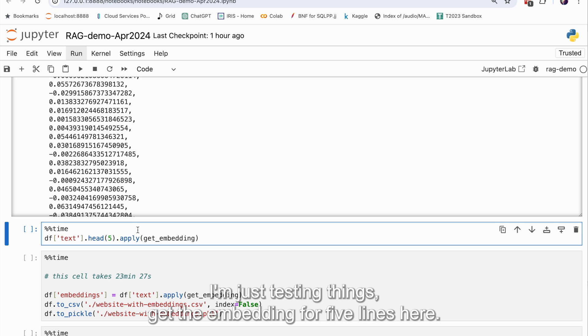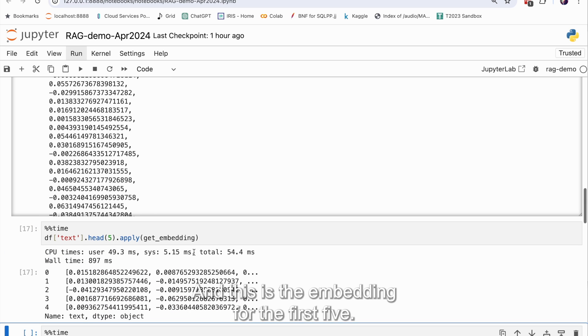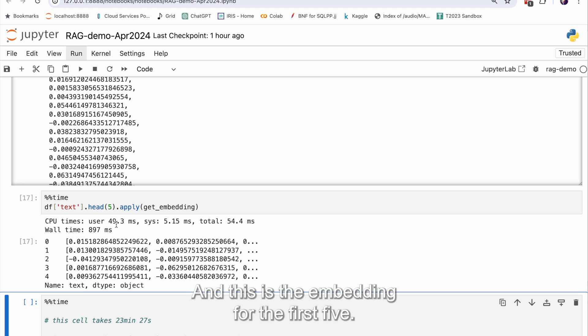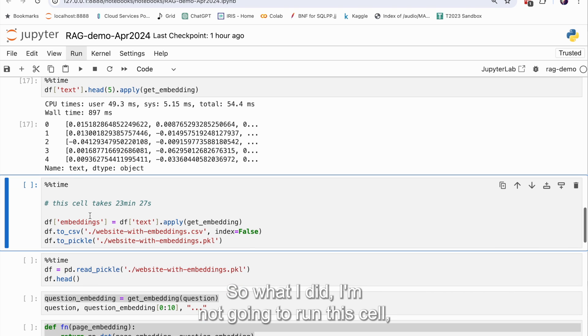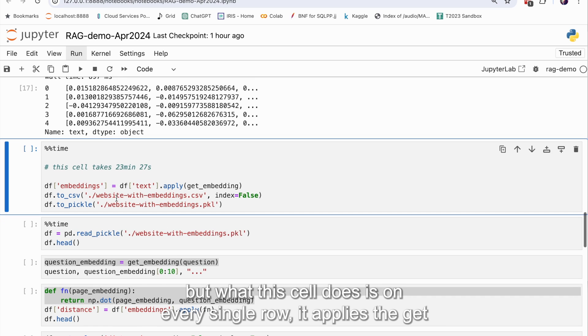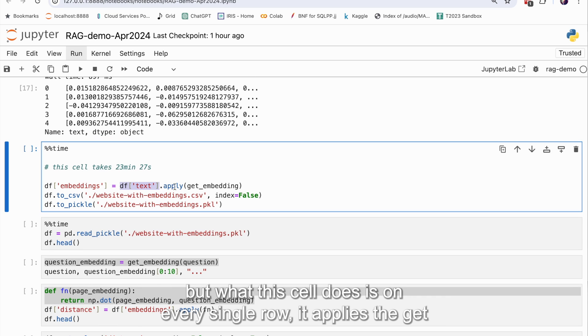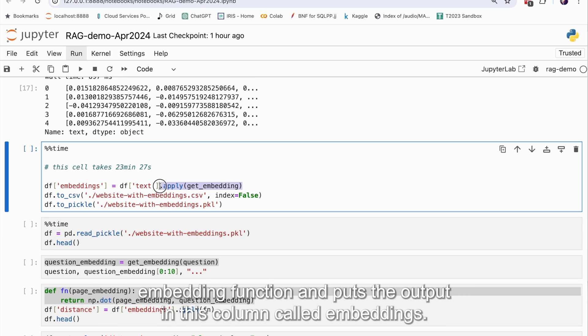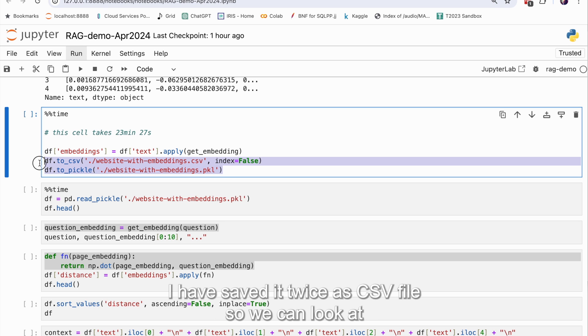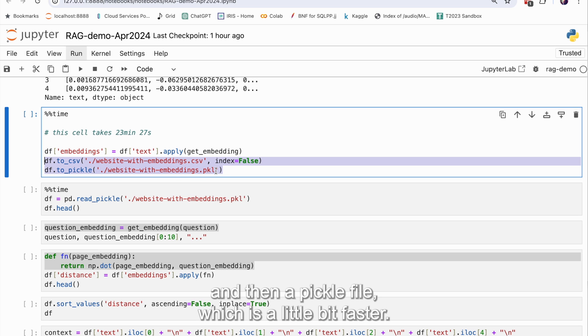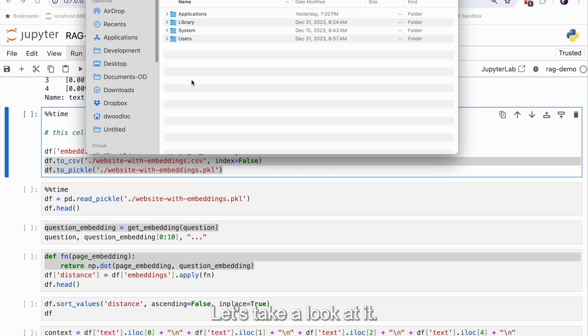So what I'm going to do here is I'm going to, I'm just testing things, get the embedding for five lines here. And this is the embedding for the first five. This takes under a second, but nevertheless, since there's 7,000 of them, it takes a while to get all the embeddings. So what I did, I'm not going to run this cell, but what this cell does is on every single row, it applies the get embedding function and puts the output in this column called embedding. So I have done that. I have saved it twice, actually a CSV file, so we can look at, and then a pickle file, which is a little bit faster.